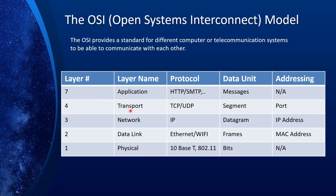Layer four is called the transport layer, and the protocols are TCP and UDP. The data unit is segment and addressing is port. This layer is used when client and server need to engage in a conversation such as request and response — that's the layer where this conversation happens. Layer seven is called the application layer, and the protocols are HTTP, HTTPS, SMTP, FTP, and a few others. Data units are messages and there is no addressing scheme here. This is basically the format that the client and server agree to use to talk to each other when actually running on layer four.